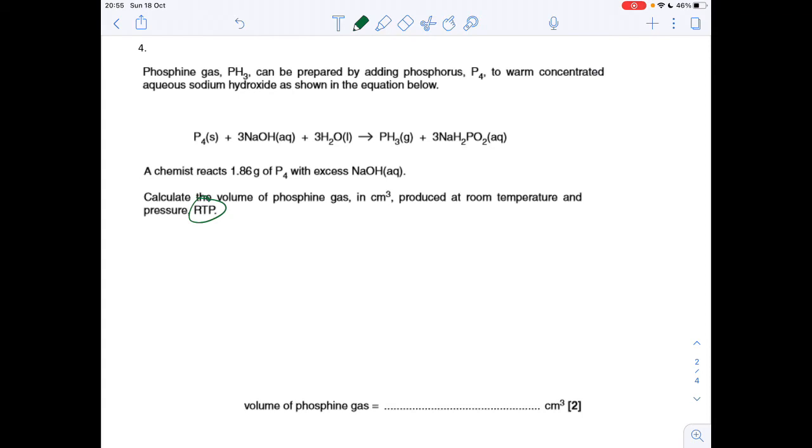Next question is a reactant volume question at RTP, so it's not ideal gas if it says room temperature and pressure or RTP. We've got 1.86 grams of P4, and we've got to work out how many cm cubed of phosphine gas. That's a 1 to 1 ratio. First we'll work out the moles of P4, mass over MR.